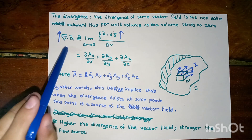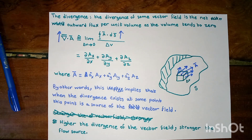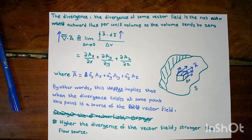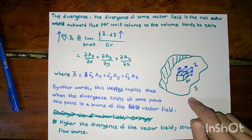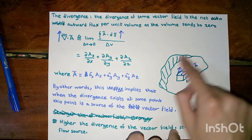Let us ask this question: what is the point of the divergence? Why do we need to take the divergence of the vector A? To understand this, let us look at this illustrative graph.